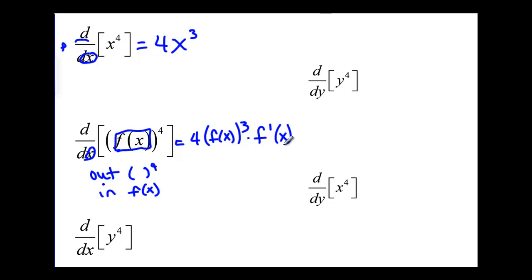This next one looks a little bit weird. It says d/dx of y^4. We're asked to take the derivative in terms of x but they don't give us any x's, they give us a y. How do we interpret that? We interpret that as y being a function of x, y depending on x.